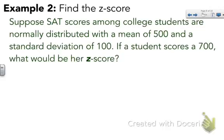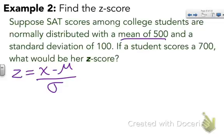For example, to find the z-score, we're going to use that formula from above. z equals x minus mu over sigma. Suppose SAT scores among college students are normally distributed with a mean of 500, a standard deviation of 100, and if a student scores a 700, what would be her z-score? What you first need to understand is what each of these things means. Remember, x stands for the individual data point, which in this case is just one student score. Mu stands for the mean, which is 500, and sigma is standard deviation, in this case 100.